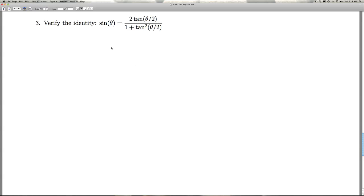All right, our last problem on this checkpoint quiz. We're asked to verify an identity: sine theta equals 2 tangent theta over 2, over 1 plus tangent squared theta over 2.